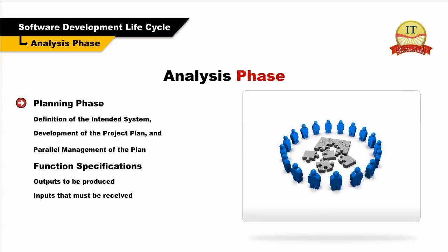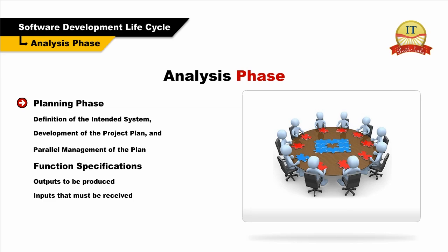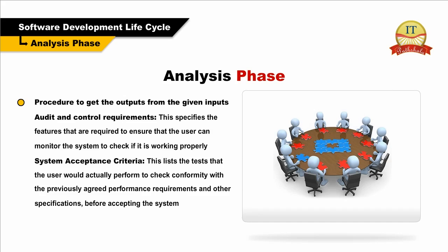Analysis Phase: This is the first and most important stage in the development. The analysis phase includes the definition of the intended system, development of the project plan, and parallel management of the plan throughout the proceedings. A detailed document called the function specification is prepared containing the following information: outputs to be produced, inputs that must be received, and the procedure to get the intended outputs from the given inputs.